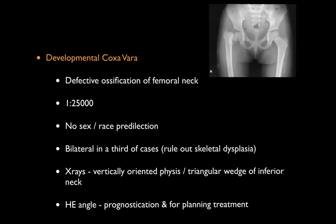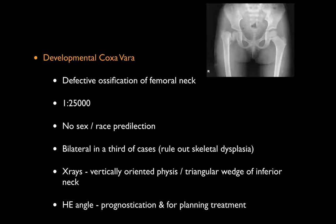Developmental coxa vara is the prototype deformity, characterized by defective ossification of the femoral neck with a triangular inferomedial neck segment. It is relatively rare but seen in clusters in certain parts of the country. There is no specific sex or race predilection. In a third of cases it is bilateral; you need to rule out skeletal dysplasia. Radiologically, the physis is vertically oriented with an inferior triangular wedge. Children present with painless limp around age three to three-and-a-half years. The Hilgenreiner Epiphyseal (HE) angle is used for prognostication and timing intervention.